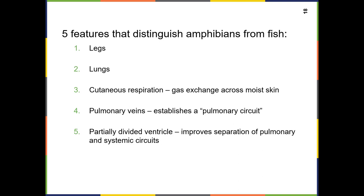Features that distinguish amphibians from their fish predecessors include legs, lungs, and cutaneous respiration. Amphibians can breathe quite a bit through their skin — their skin stays moist, and all respiratory surfaces need large amounts of surface area and must be moist. They do have lungs, but the lungs are not extremely complex; they're more like a sack and don't have as much surface area as reptile or mammal lungs.